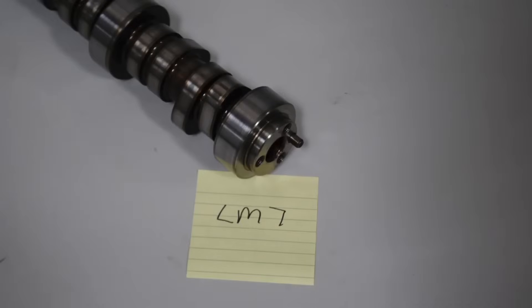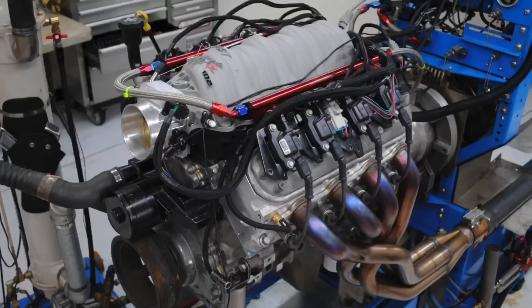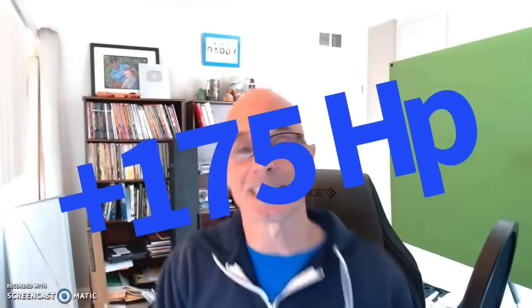The best example I have of this on the videos that I have up is on an LS application. We compared the stock 5.3L LM7 truck cam to a good camshaft on a 408 stroker. The 408 stroker had everything going for it besides the camshaft. So we ran it with the stock camshaft, but it had plenty of displacement, plenty of compression, really good cylinder heads, a really good intake manifold, long tube headers. It had everything going for it except the camshaft. So when we ran the stock camshaft and then gave it the camshaft that it needed for that 408, we picked up 175 horsepower. So does that mean a cam upgrade is worth 175 horsepower? No, not all of them.